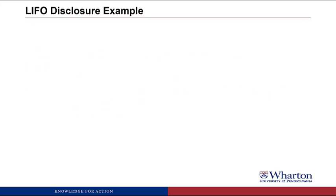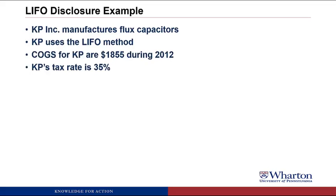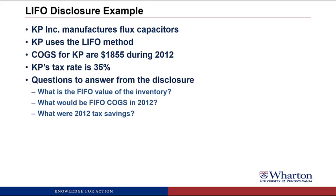Now let's take a look at an example of a LIFO disclosure. We're going to look at KP Incorporated, which manufactures flux capacitors. KP uses the LIFO method, so if we want to compare KP's results to a company that uses FIFO we have to switch KP from a LIFO to a FIFO basis. Cost of goods sold for KP are $1,855 during 2012 and their tax rate is 35%. The questions we want to answer are: what's the FIFO value of the inventory, what were the FIFO cost of goods sold in 2012, and how much did KP save in taxes during 2012.